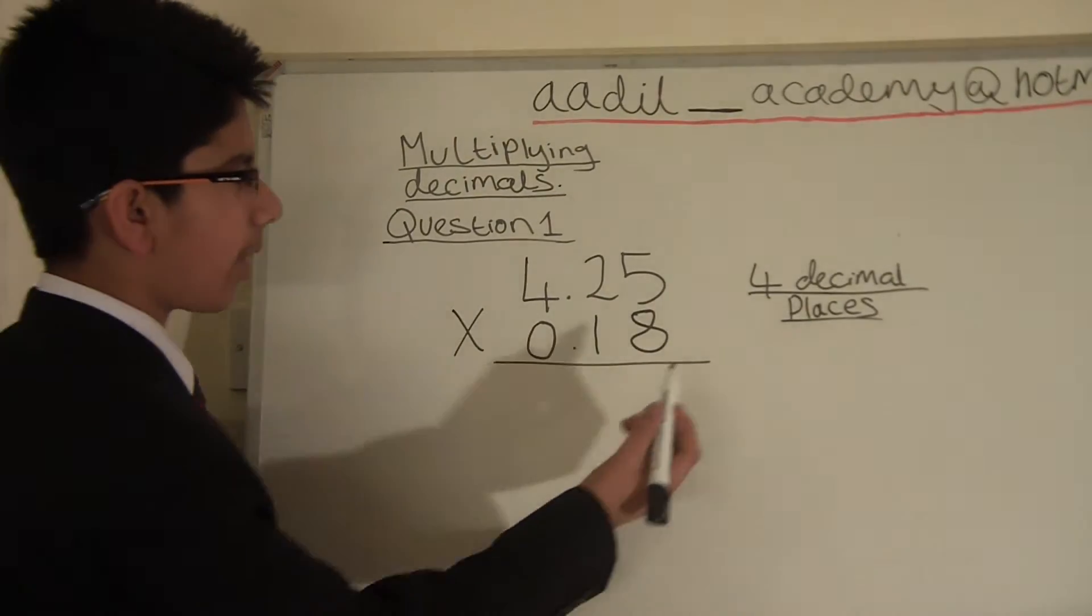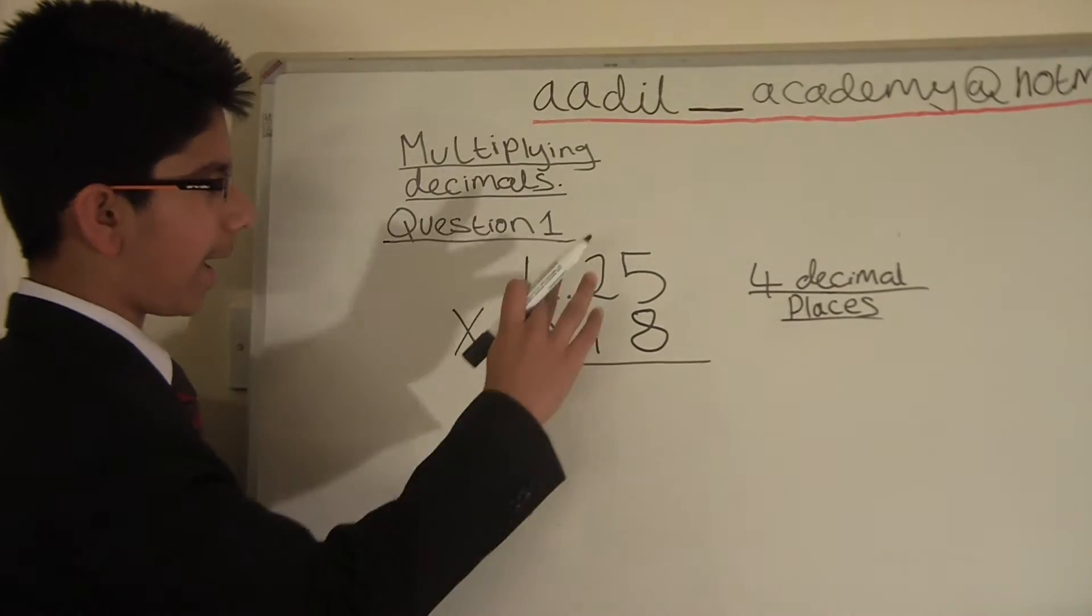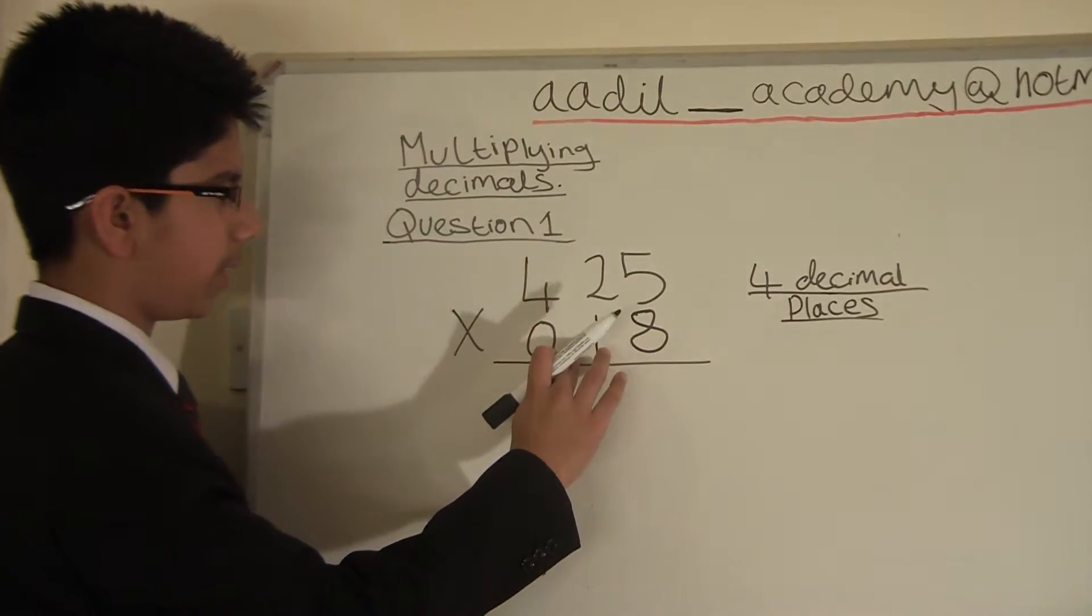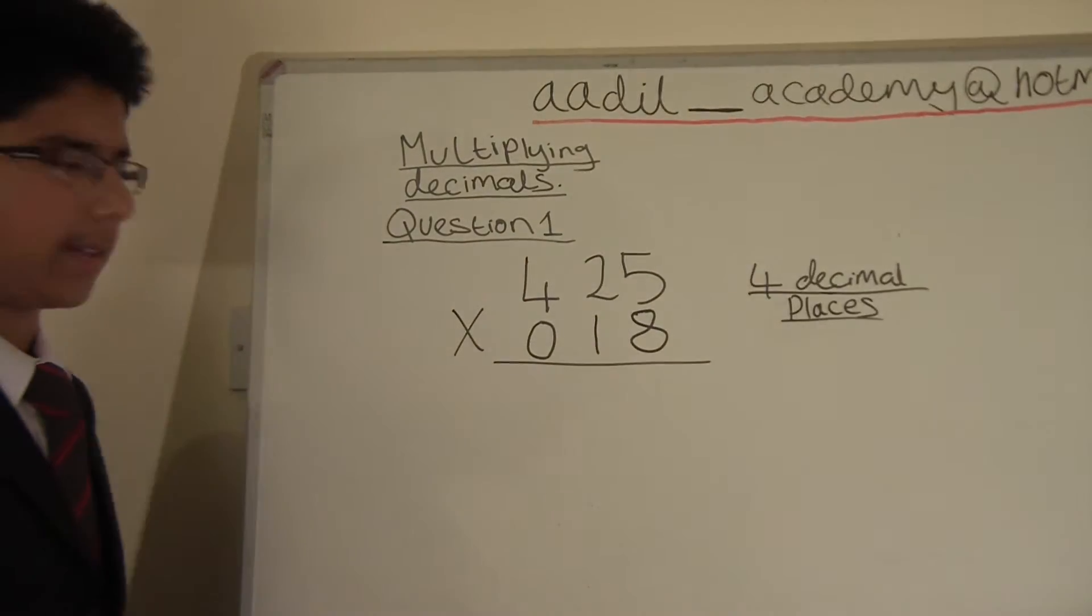That equals 4. So we just write 4 decimal places on the side and remove the decimal points. That is just to make it easier.